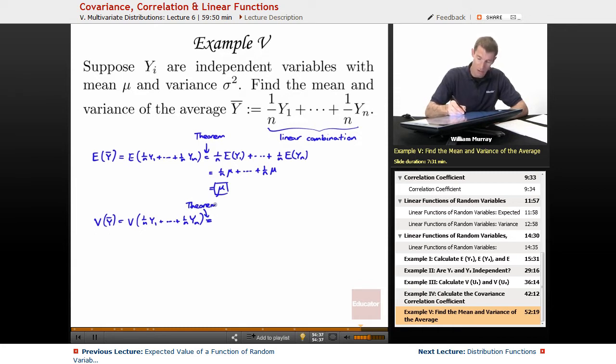And I gave you that theorem in one of the introductory slides. I said linear functions of random variables. So the way this works is you pull out the coefficients, but you square them. So 1 over n squared times the variance of y1, up to 1 over n squared times the variance of yn.